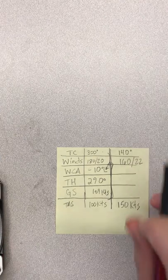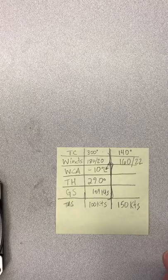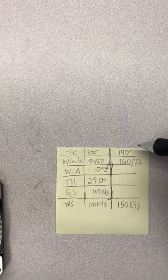Okay, so we're gonna do one more example using the wind side of our E6-B to determine correction angle, heading, true heading, and ground speed. We're gonna use this data set here.